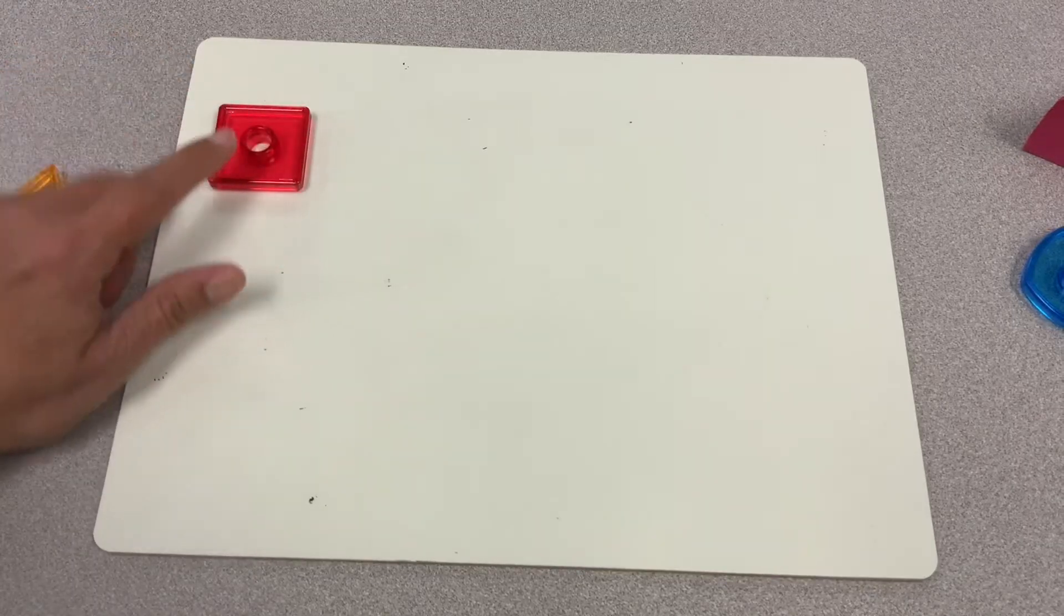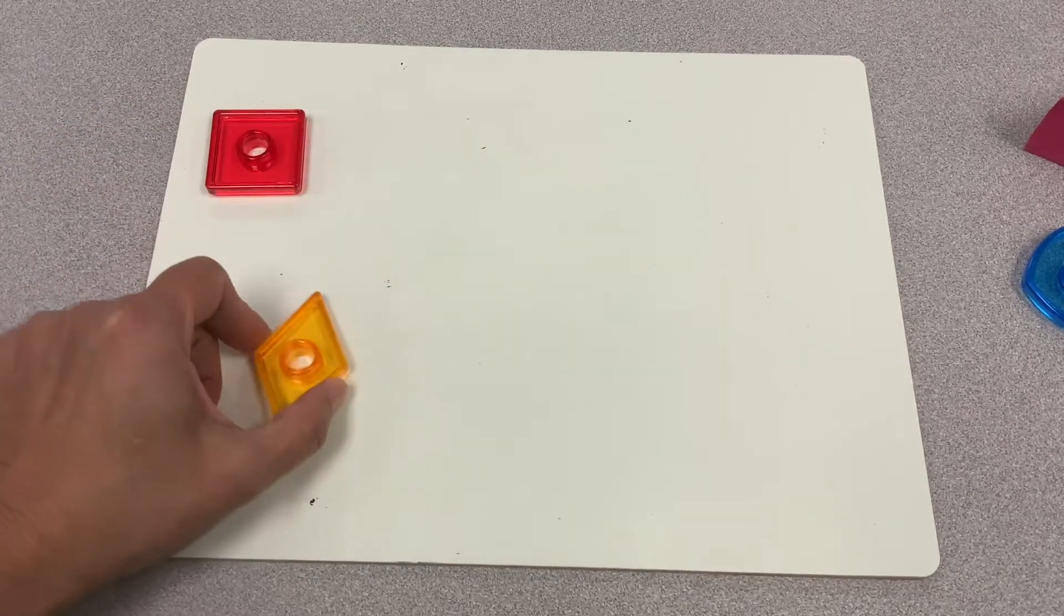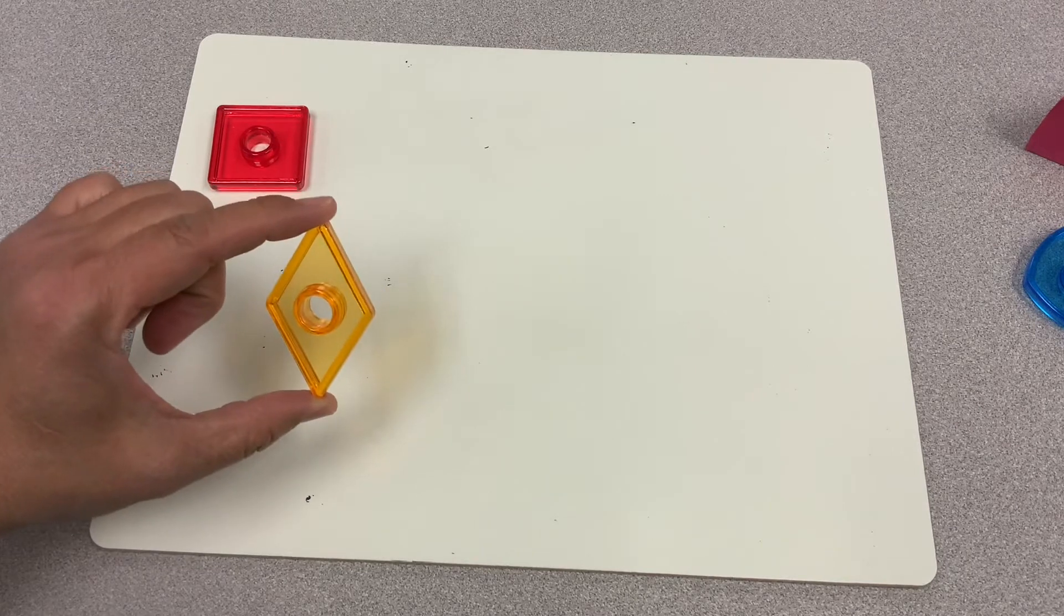We are going to review some shapes this week. Four sides the same, it's a square. How about this shape? That's a new shape that I'm going to introduce to you. Do you know what shape that is? That is a diamond.